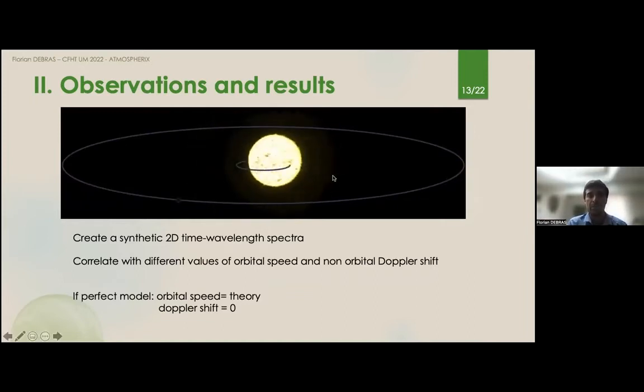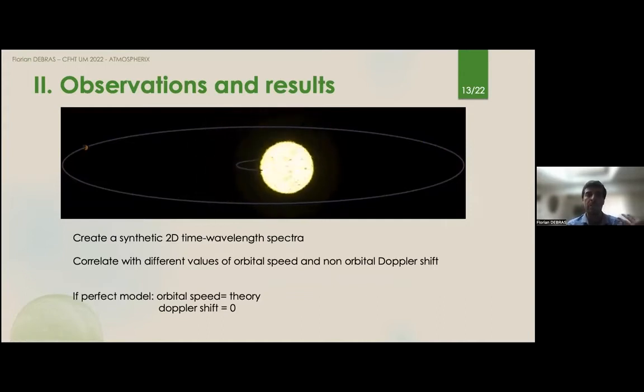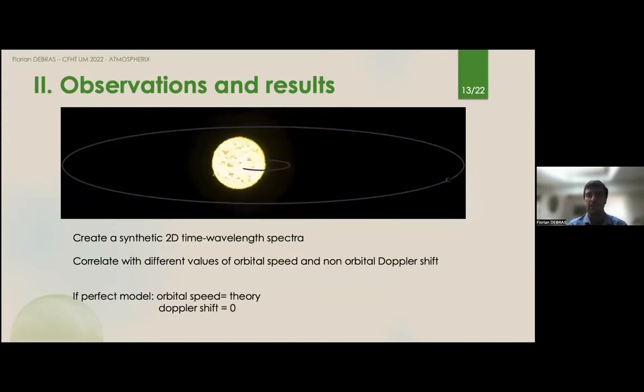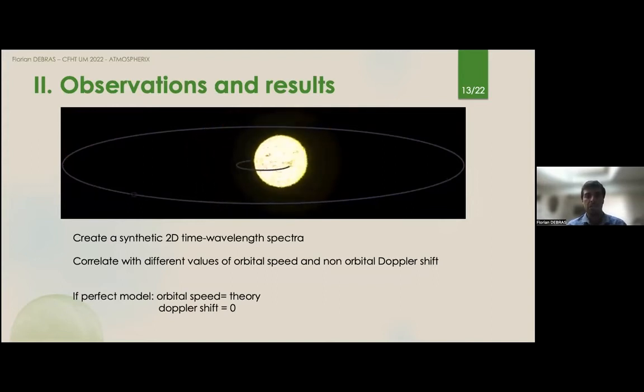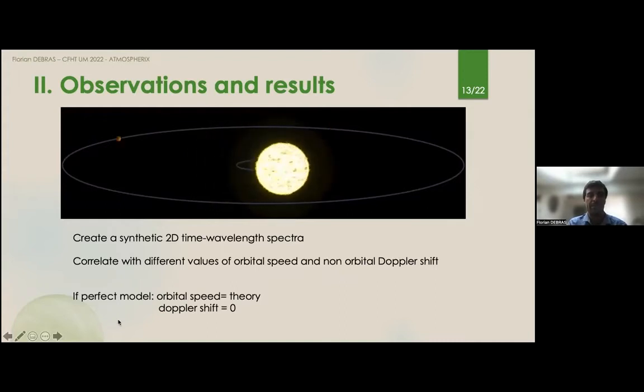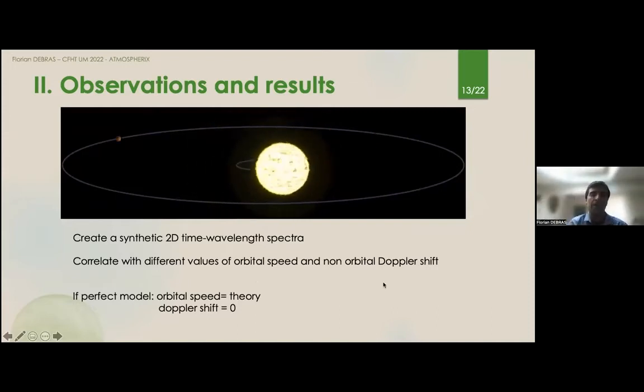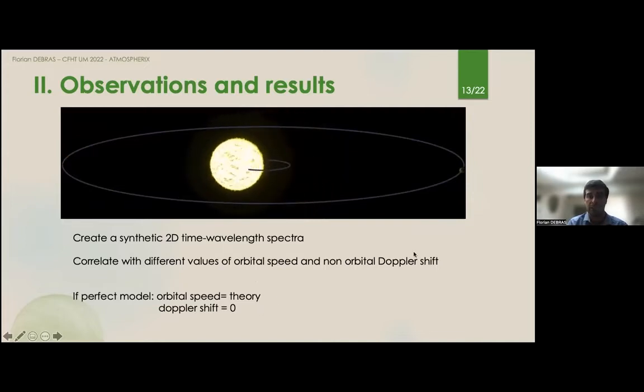We make a lot of different slopes just to be sure that the maximum of correlation is indeed associated with the theoretical orbital speed, because we know the theoretical orbital speed from the mass ratio of the star and planet and the orbital period. If we find a maximum of correlation which is very different from the orbital speed, it means that it's not a detection, it's just a spurious maximum of correlation. If our model was perfect, we would find that the maximum of correlation is associated with the theoretical orbital speed, and that the non-orbital Doppler shift, so the phenomena that we forgot to take into account, is exactly zero because our model is perfect.